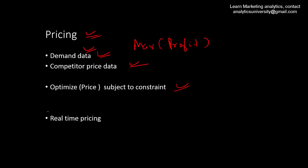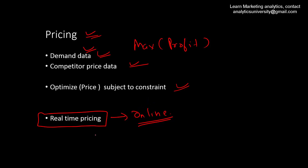The idea is to maximize profit given the demand for a product, the competitor's price, and other constraints like the minimum price or available inventory. You can also extend this to real-time pricing, which is very popular in online retail, where pricing changes based on demand, time, and many other factors. A popular example is how airlines price tickets in real time based on travel date and current demand.